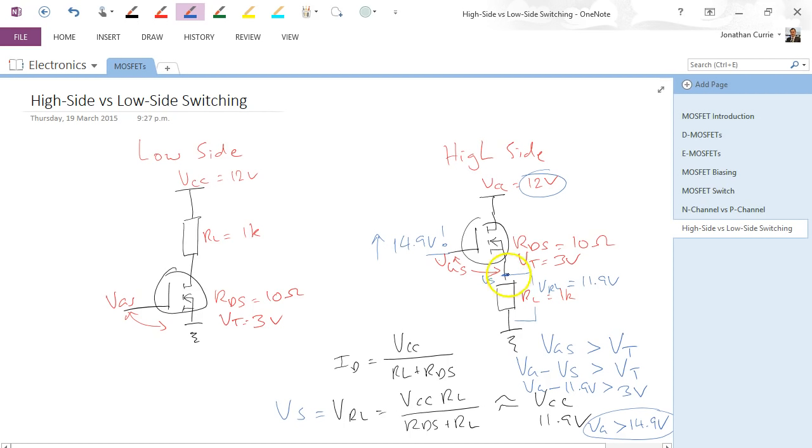What's happened is, because the load resistance is so much higher in resistance than the effective resistance across our FET, most of the voltage gets dropped across it, which means that Vs here we get a very high voltage relative to VCC. Therefore, Vg minus Vs gives us VGS. So, Vg must be very large in order to be able to go 14.9 minus 11.9 gives us the 3 volts in order to switch this on.